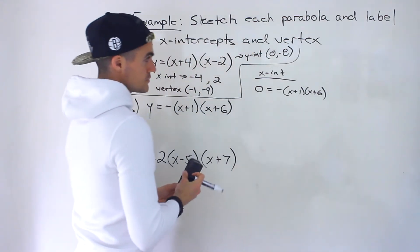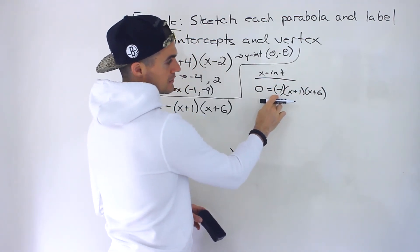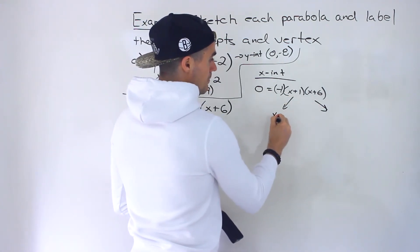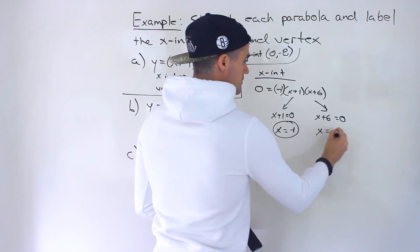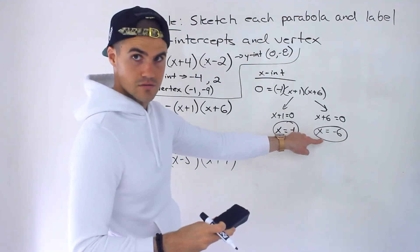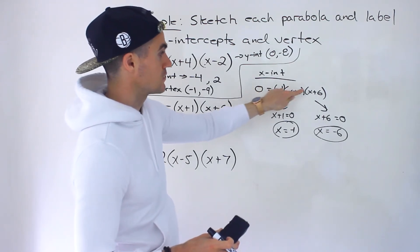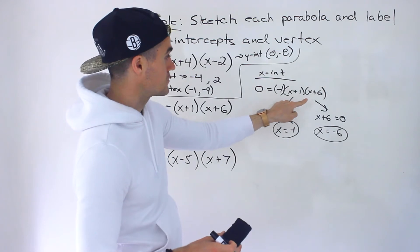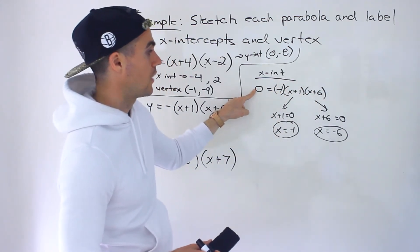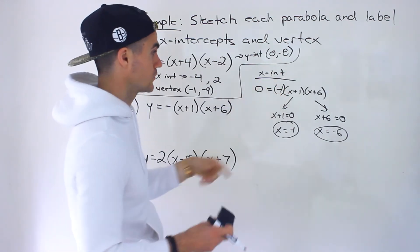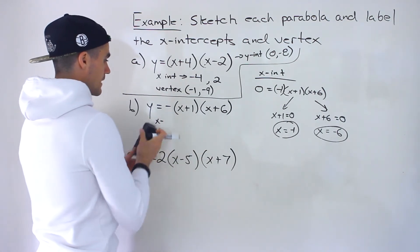Going back to finding the x-intercepts, we basically ignore the negative 1 coefficient — it's always going to be there no matter what. What x-values make these brackets equal to zero? x equals negative 1 or x equals negative 6. Those two x-values make the whole thing equal to zero. Plugging in negative 1 makes the first bracket zero; plugging in negative 6 makes the second bracket zero. So those are the two x-intercepts.